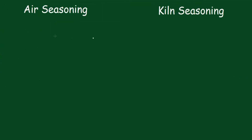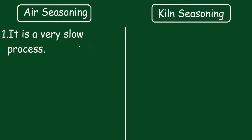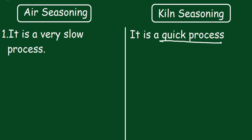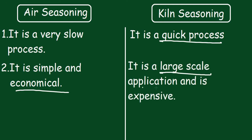Now we shall study the differences between Air Seasoning and Kiln Seasoning. Air Seasoning is a very slow process, while Kiln Seasoning is a quick process. Air Seasoning is simple and economical, while Kiln Seasoning is a large-scale application and is expensive.